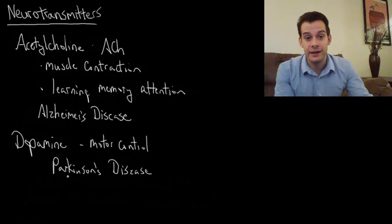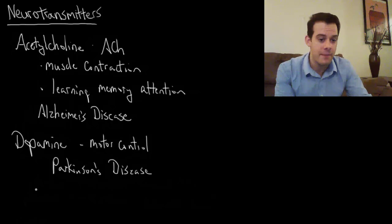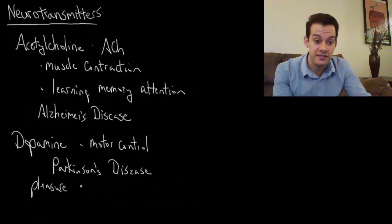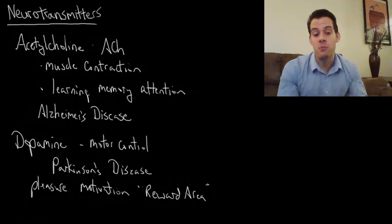But if you've heard of dopamine, it's probably not because of its relationship with motor control and Parkinson's disease. You've probably heard of it because it's associated with pleasure and motivation. This is a different area of the brain called the nucleus accumbens, often called the reward area of the brain, because in this area dopamine is released when we engage in behaviors that are pleasurable and motivating, that we're motivated to repeat these behaviors.